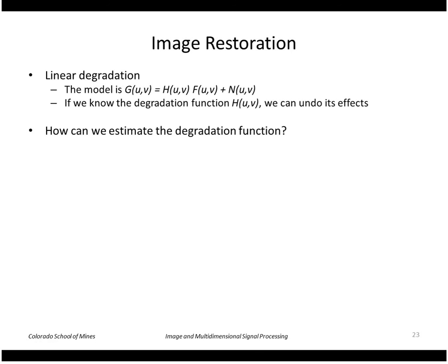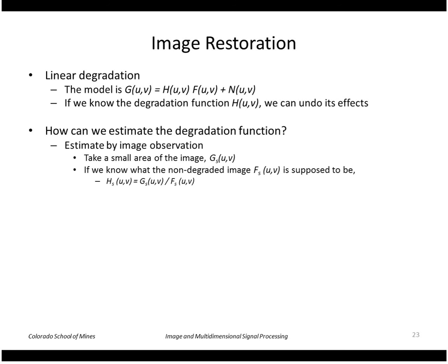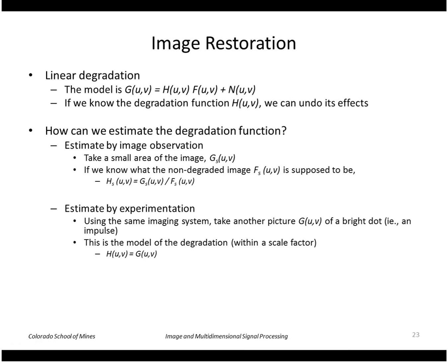We need to find out what the degradation function is. One way is by looking at a small sampled portion of the corrupted image — if we know what the non-degraded image is supposed to be, such as a corner or a dot, we can estimate H using this equation. Another way is to experiment: if we have the same imaging system, we can take another picture of an impulse — a bright dot — and that gives us the degradation function directly.